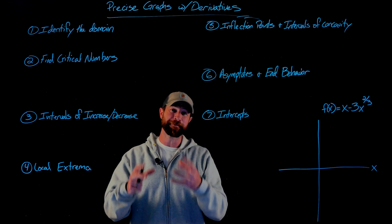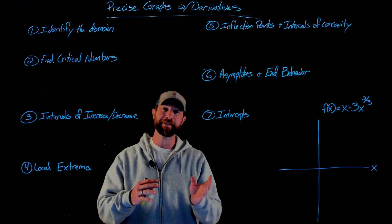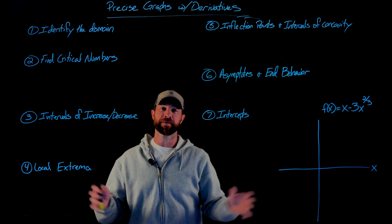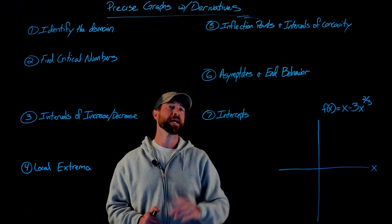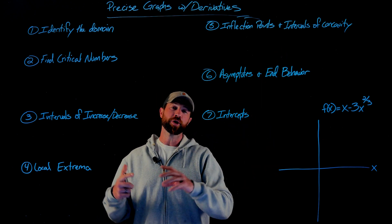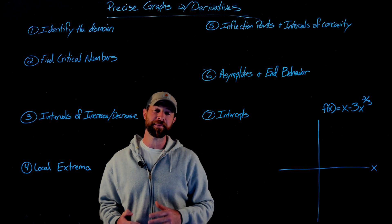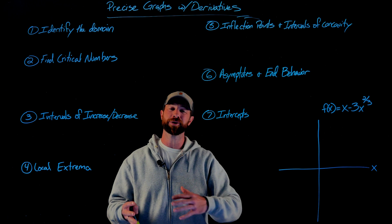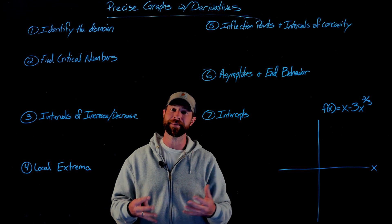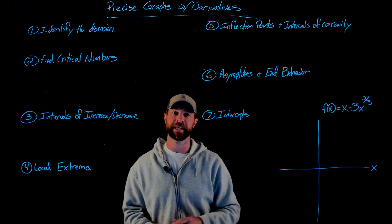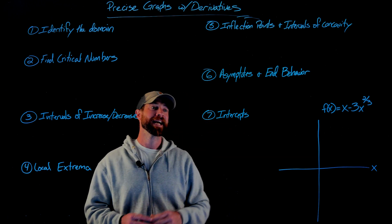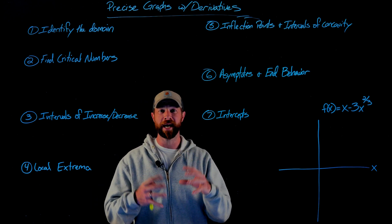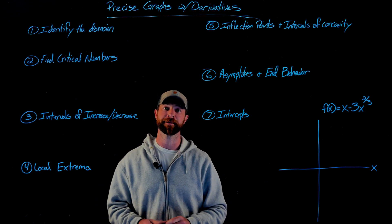Next, identifying the inflection points where concavity is changing — that's the same as finding the intervals of concavity, which we will also do. Then looking at the asymptotes and end behavior of our function, which harks back to pre-calculus and the idea of limits going to infinity and negative infinity. Finally, finding our intercepts — our x-intercepts and our y-intercept — and then graphing the function.